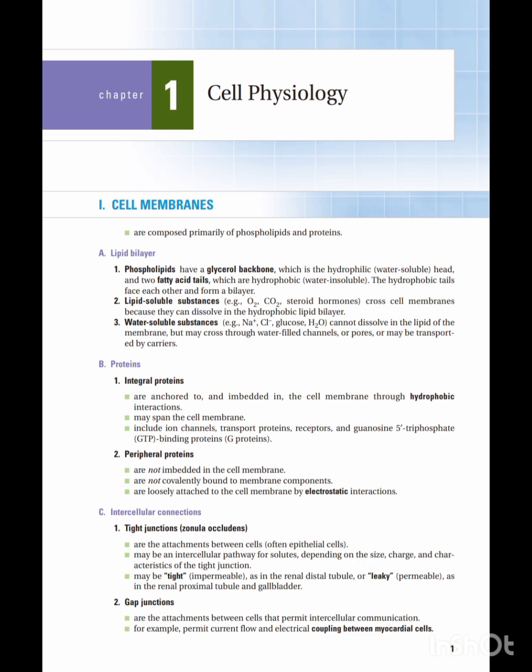The last topic on page one covers intercellular connections, which are of various types: tight junctions, adherent junctions, desmosomes, and gap junctions — though here only two are discussed. Tight junctions, also known as zona occludens, are attachments between epithelial cells. They can be tight and impermeable, as in the renal distal tubule, or permeable and leaky, as in the renal proximal tubule and gallbladder.